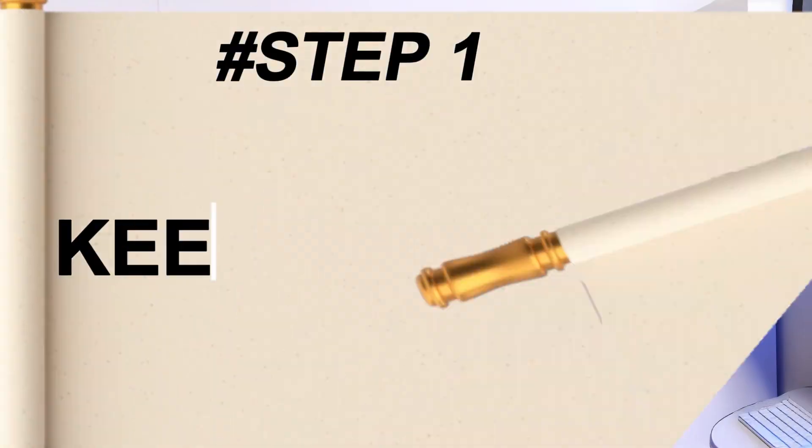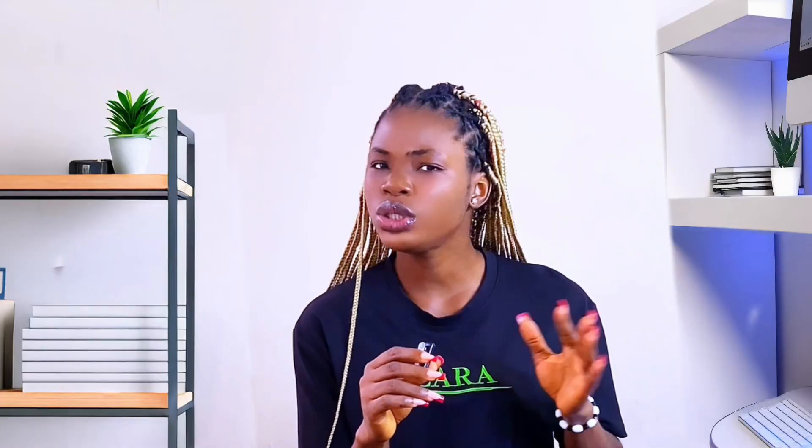First things first: keep your setup simple. Make sure you are filming in a very simple and clean background — even if you have something like a window frame, just like I do, or a simple wall behind you. That is fine. Remove anything that doesn't need to be there. No need making it complicated. The simpler your background, the better your final result will look.